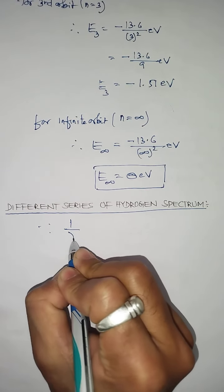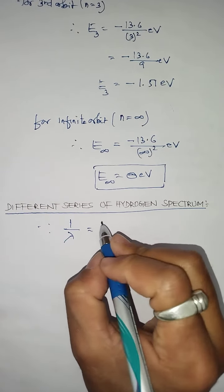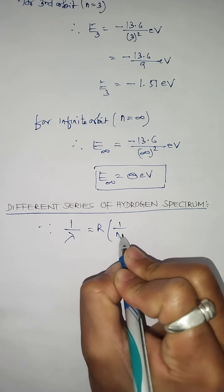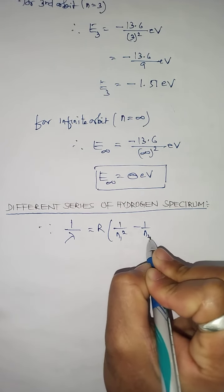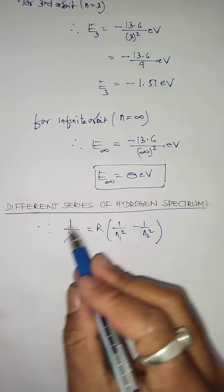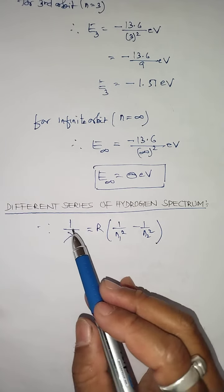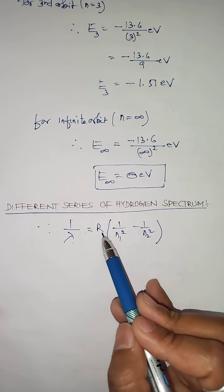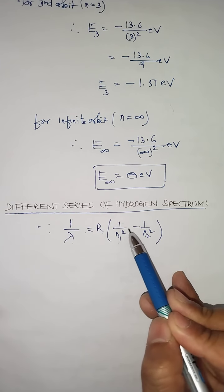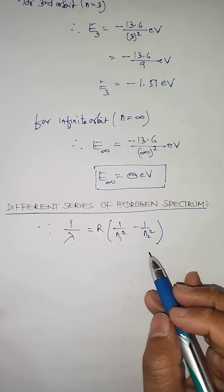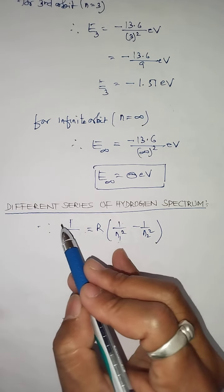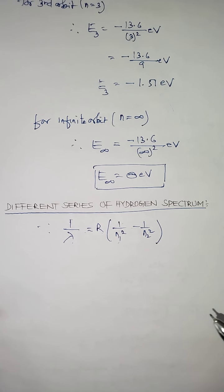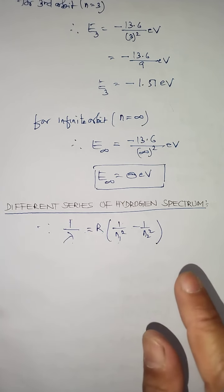The relation is: 1 by lambda equals to R times (1 by N1 square minus 1 by N2 square). We derived this already in the last YouTube video. The wavelength of emitted radiation in hydrogen atom is given by 1/λ = R(1/N1² − 1/N2²). This quantity is called wave number, and lambda is called the wavelength of the emitted radiation, according to Bohr's theory of hydrogen atom.